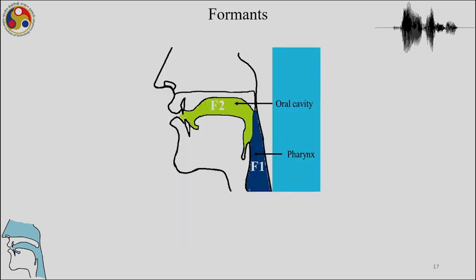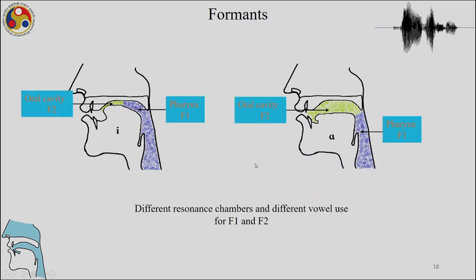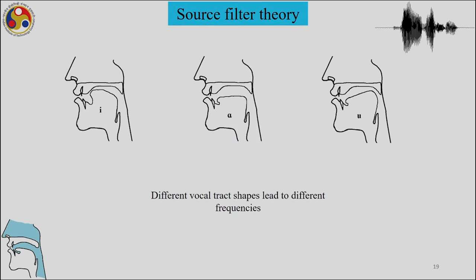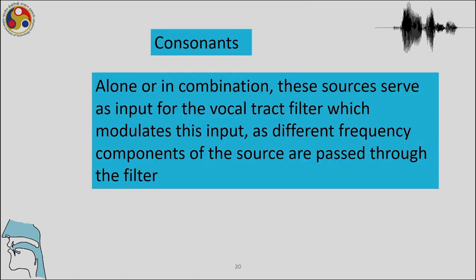Recall our lectures on formants, which showed that the oral cavity and pharyngeal cavity modulate the speech spectra generated from the glottal region. We have seen all these resonance chambers and how the spectra is modulated by the vocal tract. This is the source-filter theory — how sound is produced and filtered in the vocal tract. These sources serve as input for the vocal tract filter, which modulates the input as different frequency components of the source are passed through the filter.